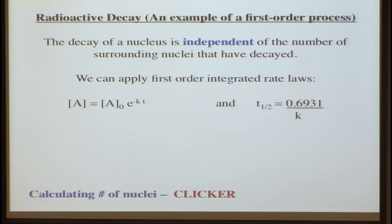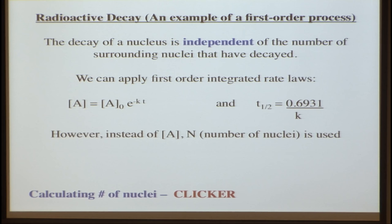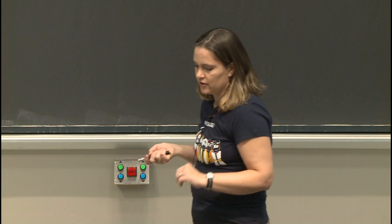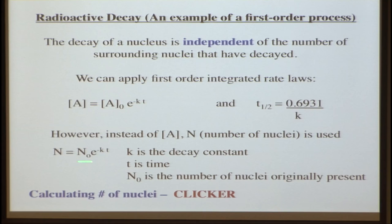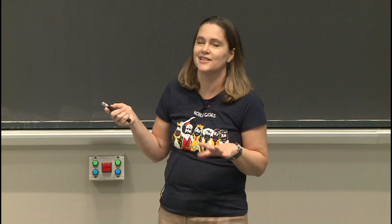Instead of concentration of A, we're going to use N, the number of nuclei. So we write the same expression: N, the number of nuclei at some particular time, equals the number of nuclei originally times e to the minus k — a decay constant, since the rate being measured is radioactive decay — times t. N₀ is the original number of nuclei.